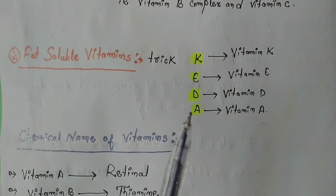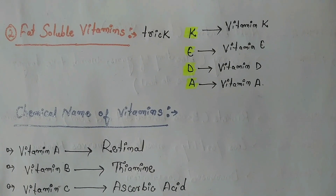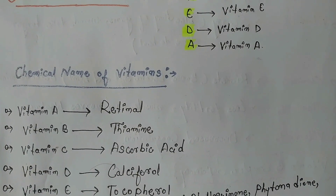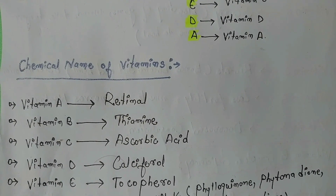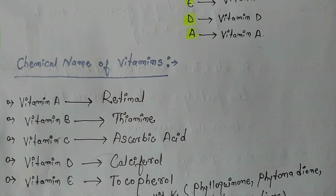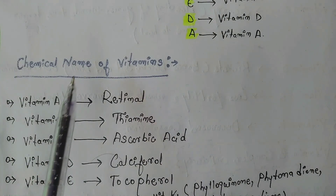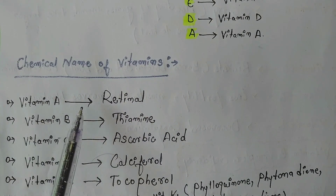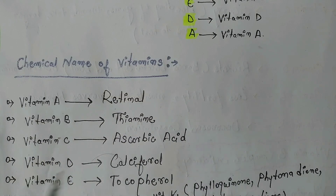Now the chemical names of vitamins. Vitamin A: retinol. Vitamin B1: thiamine. Vitamin C: ascorbic acid. Vitamin D: calciferol. Vitamin E: tocopherol.